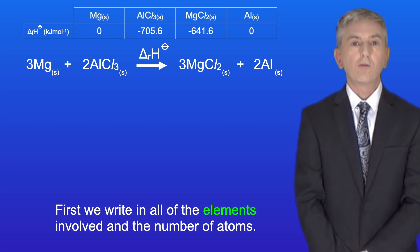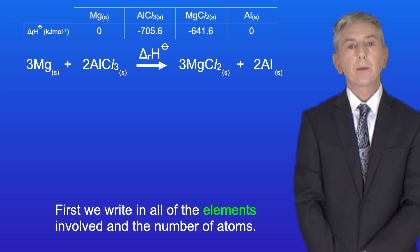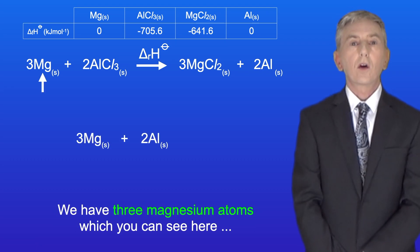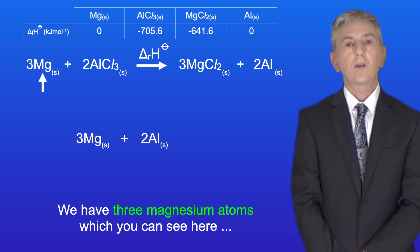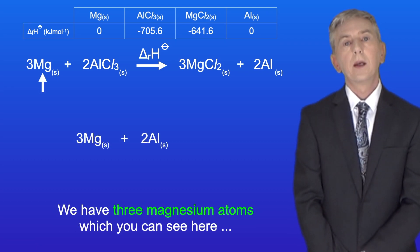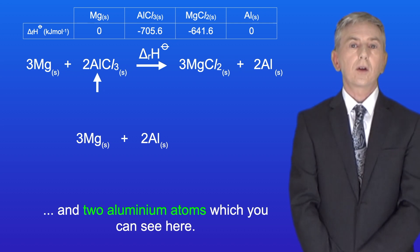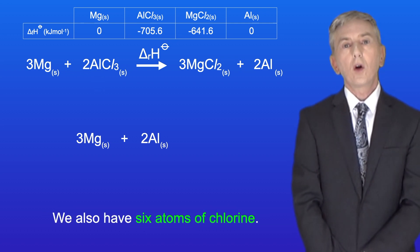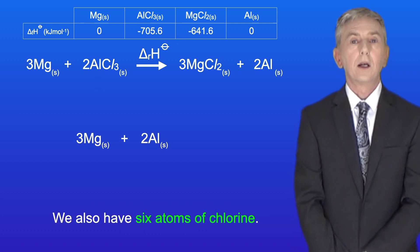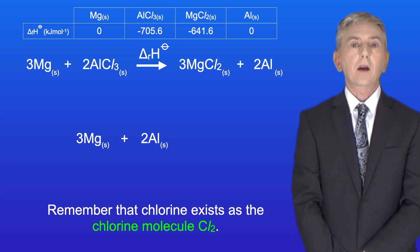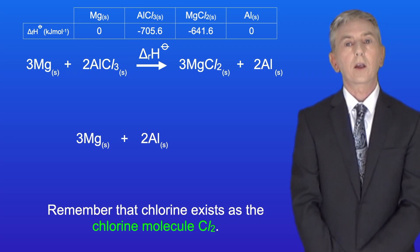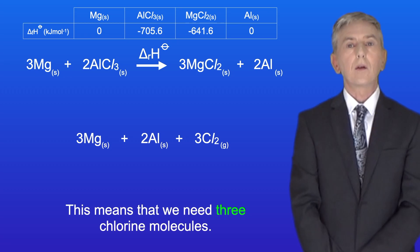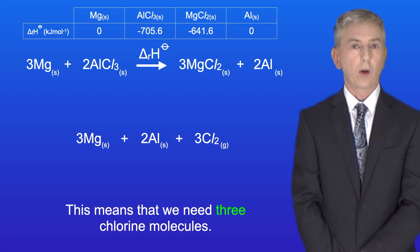First we write in all of the elements involved and the number of atoms. We've got three magnesium atoms, which you can see here, and two aluminium atoms, which you can see here. We also have six atoms of chlorine, and remember that chlorine exists as the chlorine molecule Cl₂. This means that we need three chlorine molecules.